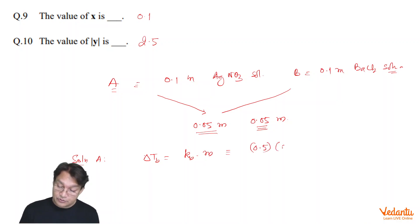M was equal to 0.1 and i is equals to, in this case, because it is going to be completely dissociated, i here is equals to 2 because it is completely dissociated. So, that is giving us the value of 0.1 degree centigrade.